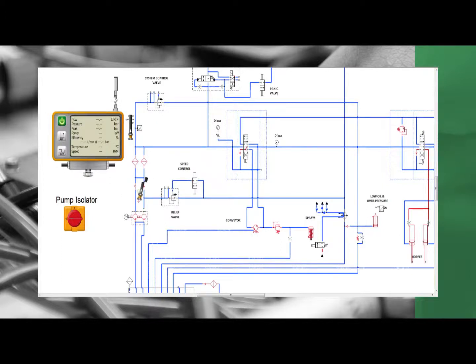Here we are conducting a pump flow test on pump number two. Firstly the machine is isolated. Connections are made and then the test is done.